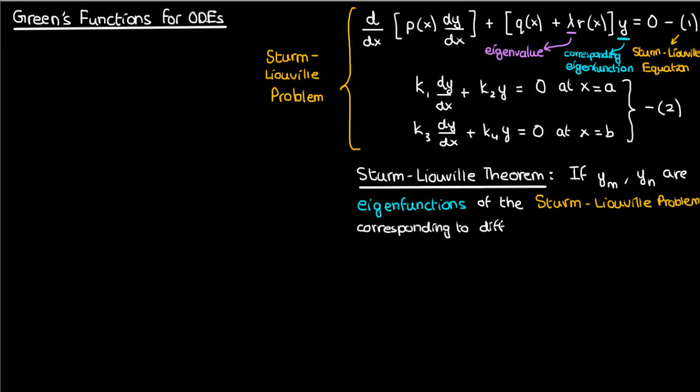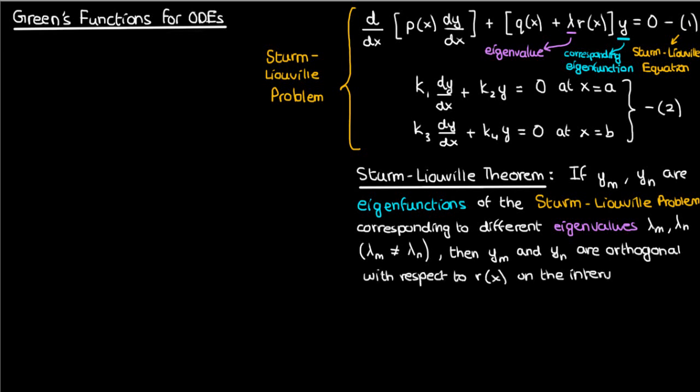What it says is that if I had two solutions y sub m and y sub n to the Sturm-Liouville problem, y sub m corresponding to some eigenvalue lambda sub m and y sub n corresponding to some other eigenvalue lambda sub n, then those two solutions y_m and y_n would be orthogonal on the interval from one boundary a to the other boundary b with respect to the weighting function r of x.